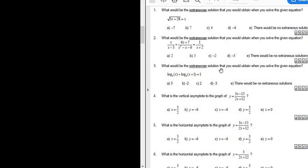Problem number three. What would be the extraneous solution that you would obtain when you solve the given equation? We have a logarithmic equation, and we're being asked for the extraneous solution. The extraneous solution is the answer you get that doesn't check. So if you go through this whole process and get some answers, the one that doesn't check is the answer. If you have to guess, it's going to be one of the negative ones - it'll be B or D. But let's work through it.